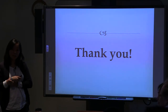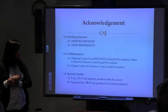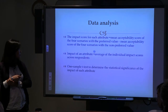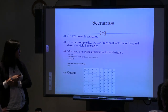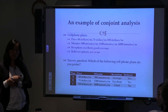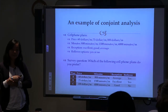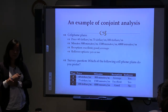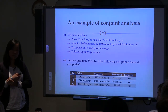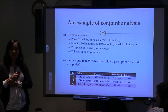A question was raised about conjoint analysis and the cell phone plan example: often you don't know how many minutes you'll want until you've used the phone for a while. Similarly, an administrator might not realize their real preferences until they've gone through the intervention. Are there plans to take the same people and do a second conjoint analysis at the end to see how preferences change?